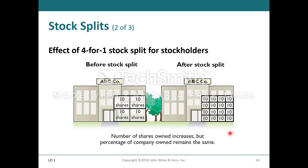Sometimes companies do stock splits to make their stock more marketable. If the stock is going for $100 and they split, it becomes $50 for two shares instead of $100 for one share. You also have reverse stock splits, where a $50 stock becomes $100 by doing a reverse split, to attract a certain type of clientele.